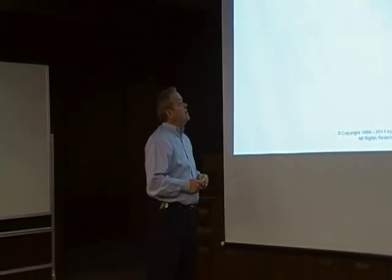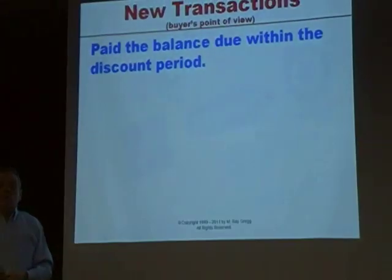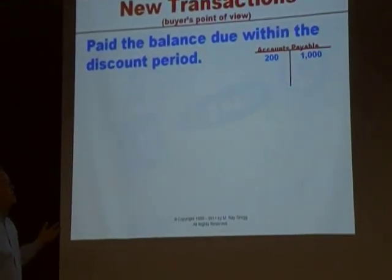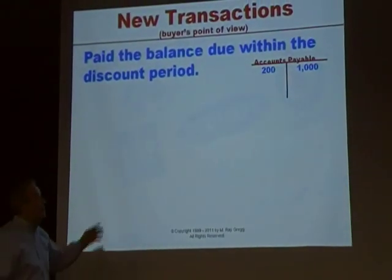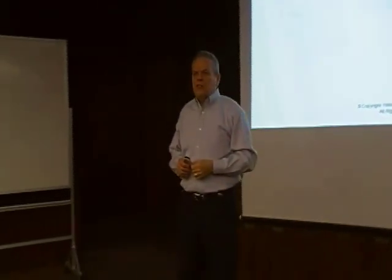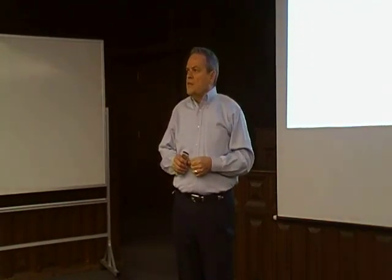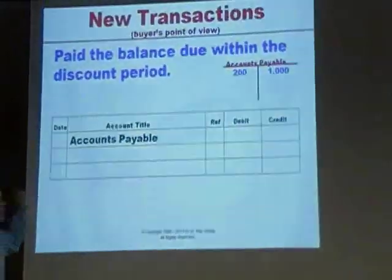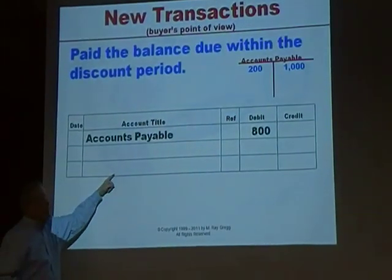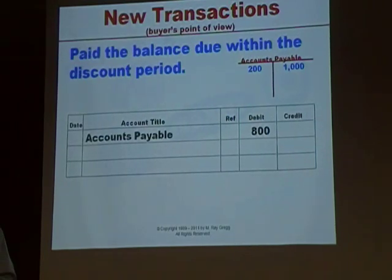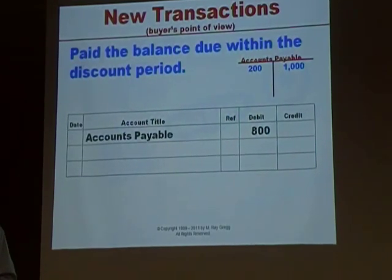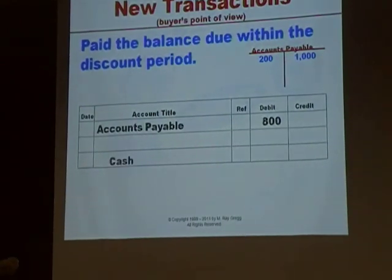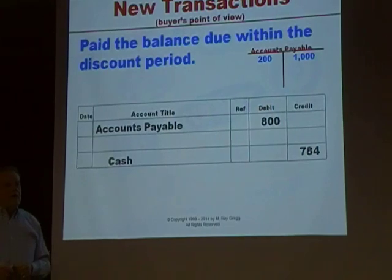What if we pay for the goods within the discount period? The original invoice was $1,000, but we returned $200, so we owe $800. We're going to debit accounts payable for the full $800 to eliminate what we owe. The actual check we write will be for less because we're paying on time: $800 times 2% is $16, so we write the check for $784.